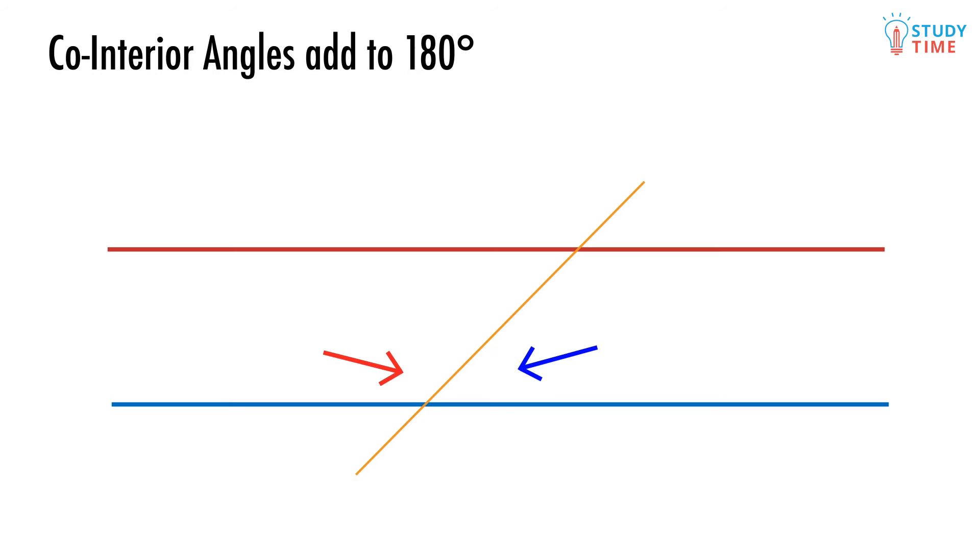These co-interior angles add up to 180 degrees, a straight line. We can see that if we drew our third line like this, then both would be 90 degrees. As this line rotates, one angle gets smaller at the same rate at which the other angle gets bigger.